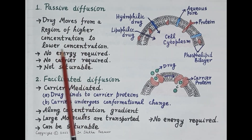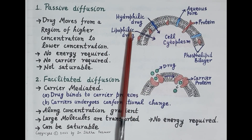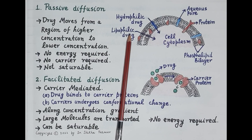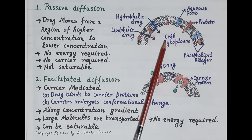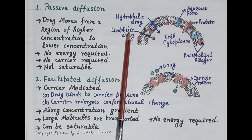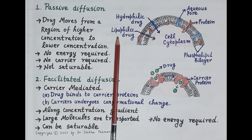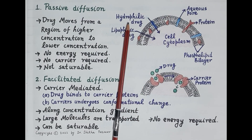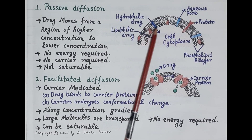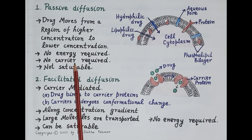Passive diffusion is the transport of drug along the concentration gradient — that is, the drug moves from a region of higher concentration to a region of lower concentration. Once the drug is administered, it is present in high concentration in the extracellular fluid and moves toward the cell cytoplasm. The unionized form of drug is lipid-soluble or lipophilic and diffuses rapidly through the phospholipid molecules, whereas the ionized form is water-soluble or hydrophilic and diffuses through the aqueous pores. No energy and no carriers are required.